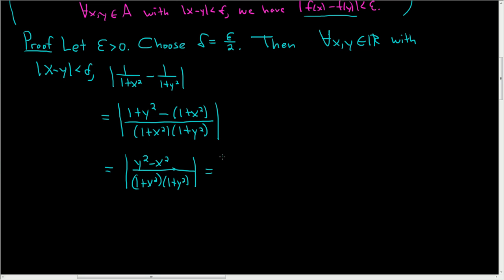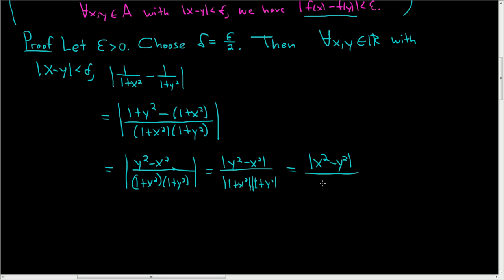This can be written as |y²−x²| over |1+x²||1+y²|. I prefer to rewrite this as |x²−y²| over |1+x²||1+y²| — you don't have to, it just makes more sense to me. This is the difference of squares, and so far we've done nothing tricky; this is the natural thing to do.